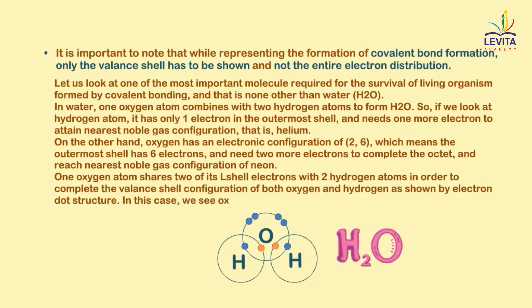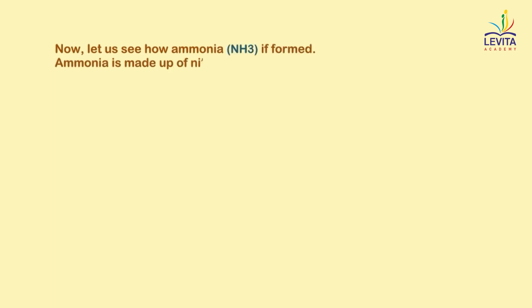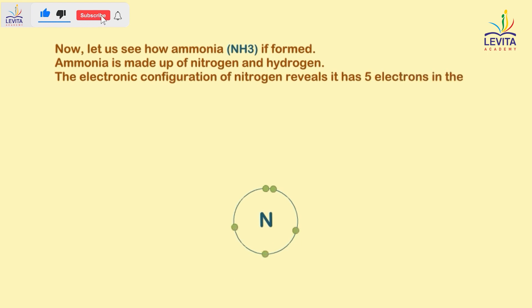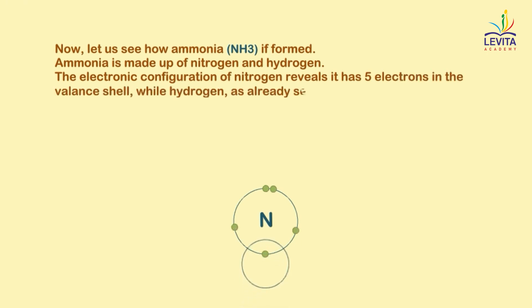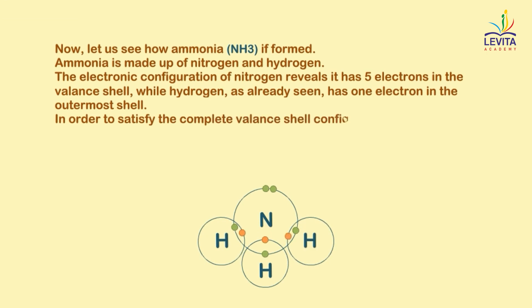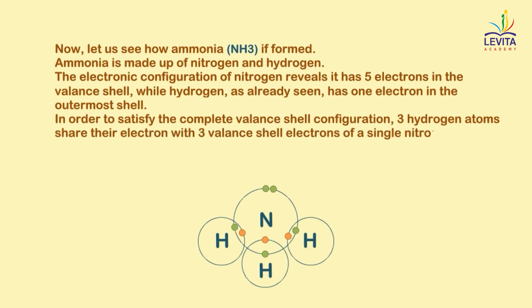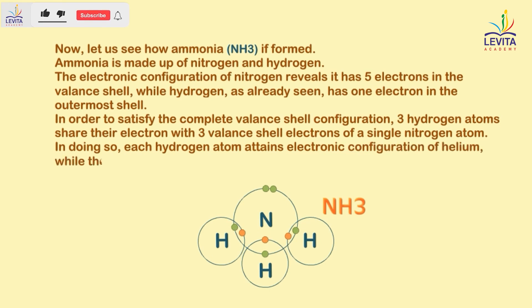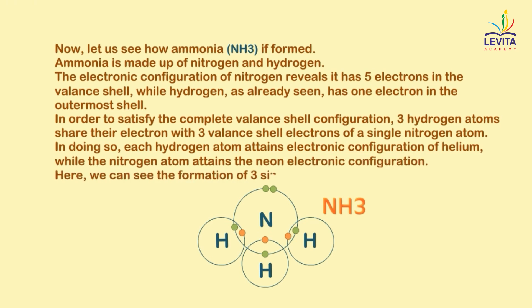In this case, we see the oxygen atom form two covalent bonds — one with each hydrogen atom. Now, let us see how ammonia is formed. Ammonia is made up of nitrogen and hydrogen. The electronic configuration of nitrogen reveals it has five electrons in the valence shell, while hydrogen has one electron in the outermost shell. So, in order to satisfy the complete valence shell configuration, three hydrogen atoms share their electron with three valence shell electrons of a single nitrogen atom. In doing so, each hydrogen atom attains the electronic configuration of helium, while the nitrogen atom attains the neon electronic configuration. Here we can see the formation of three single covalent bonds.